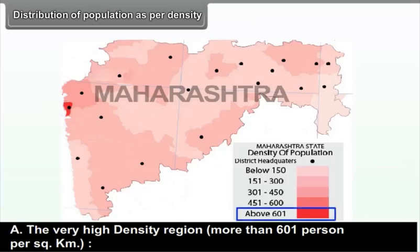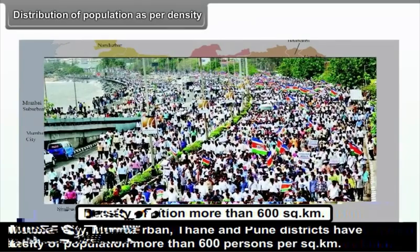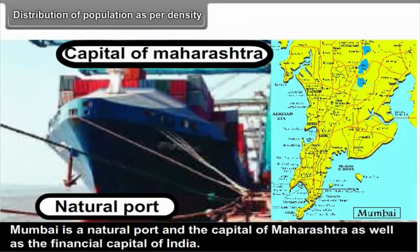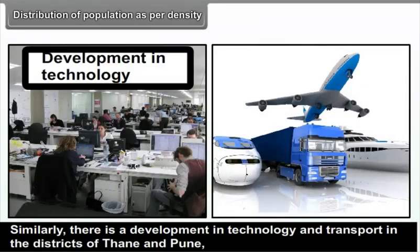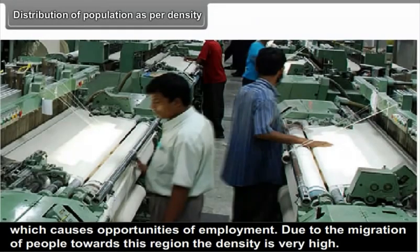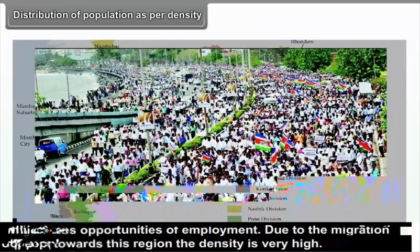7.1.2 Distribution of Population. (A) Very High Density Region — more than 601 persons per square kilometer: Mumbai City, Mumbai Suburban, Thane, and Pune districts have a density of more than 600 persons per square kilometer. Mumbai is a natural port and the financial capital of India. Thane and Pune have developed technology and transport, creating employment opportunities, resulting in very high density due to migration.